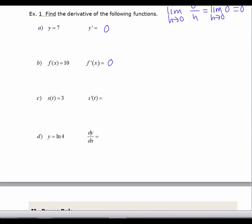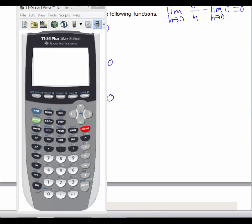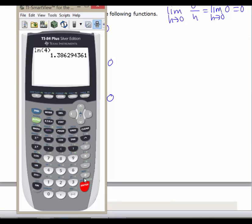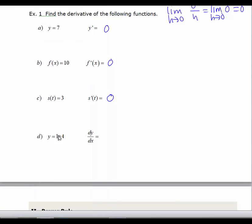s(t) equals 3, s'(t) would equal 0. And y equals the natural log of 4. The natural log of 4 is just a number. If I pull up the calculator and just do natural log of 4, it's a decimal value. It's an irrational number, but it's approximately equal to 1.39. So the derivative of the natural log of 4 is the same thing as the derivative of a constant, which would be 0.